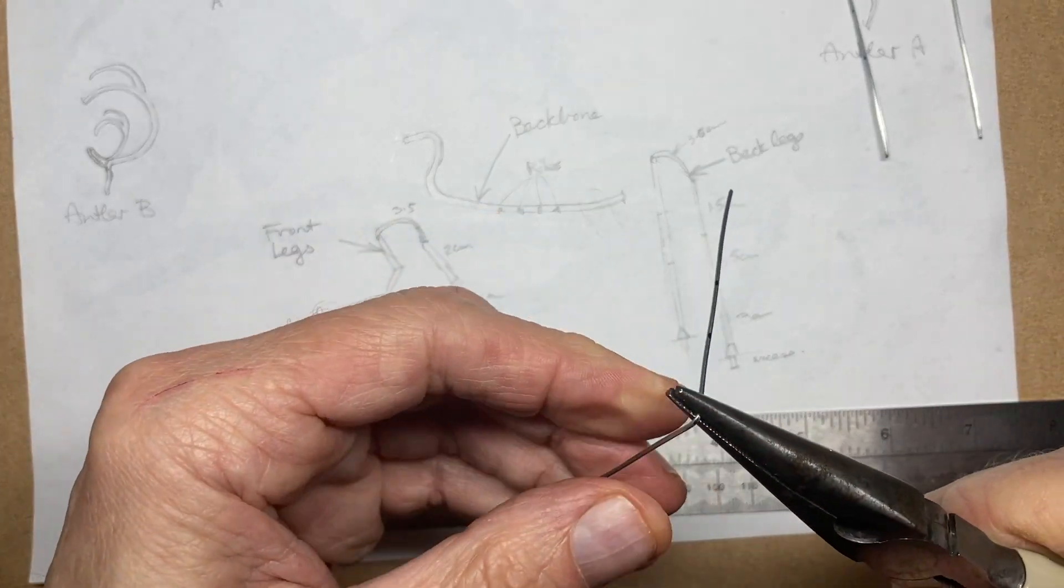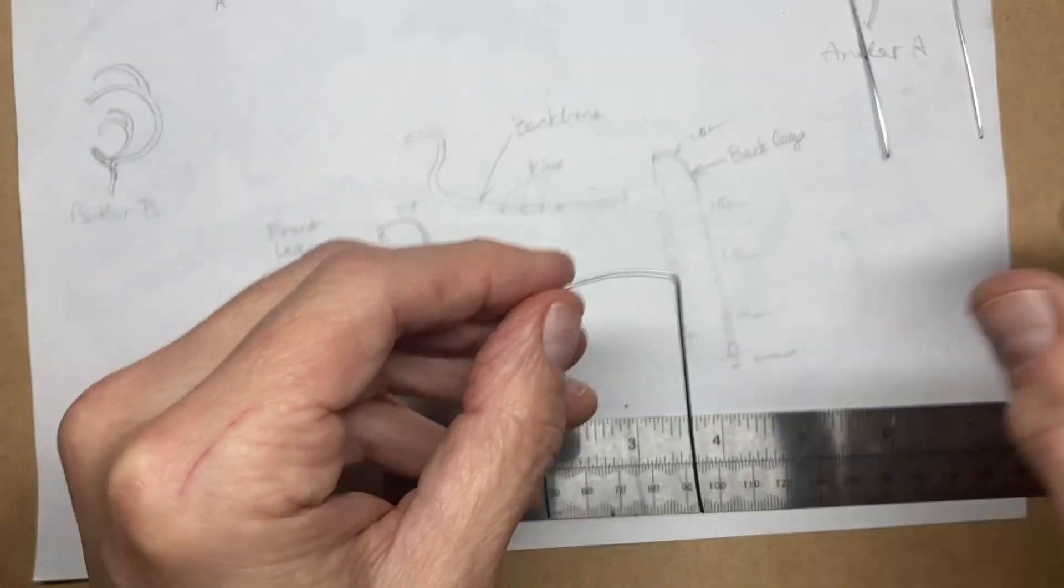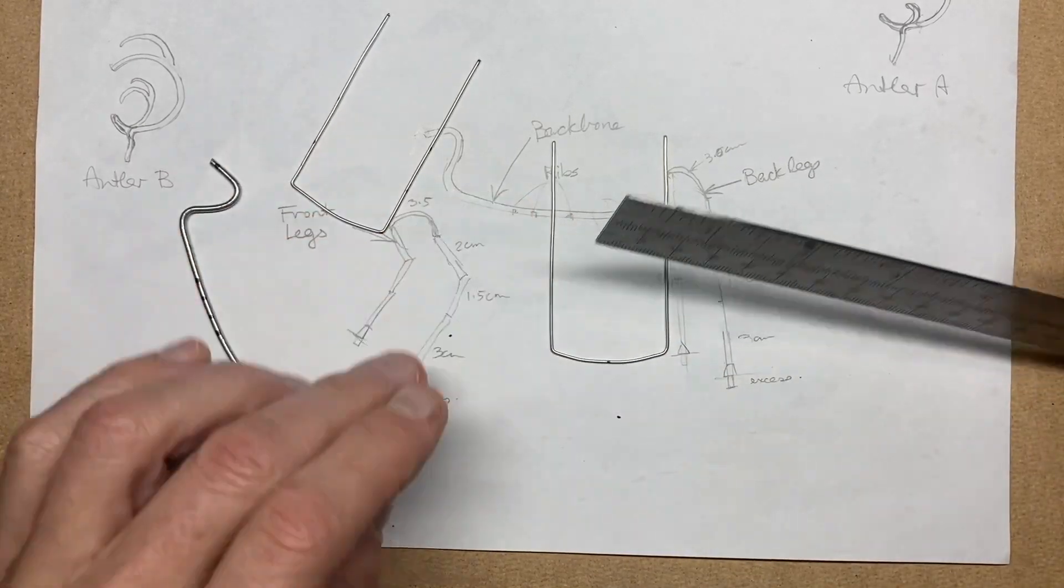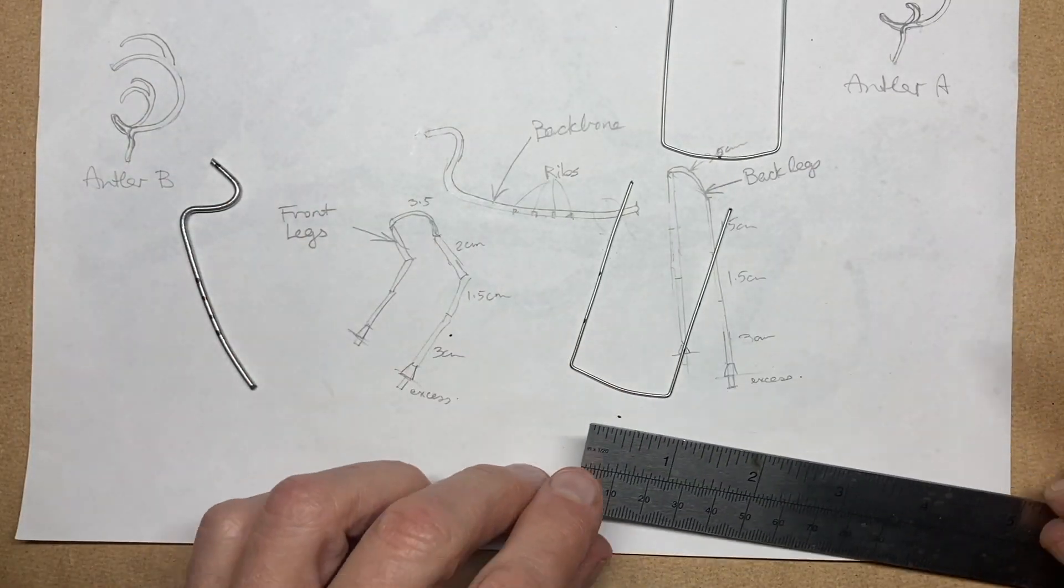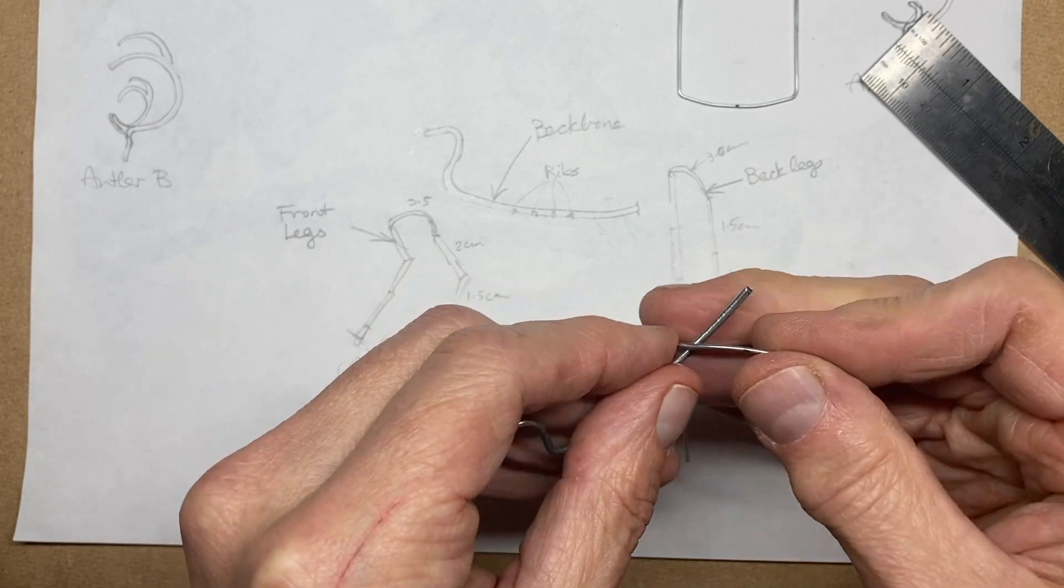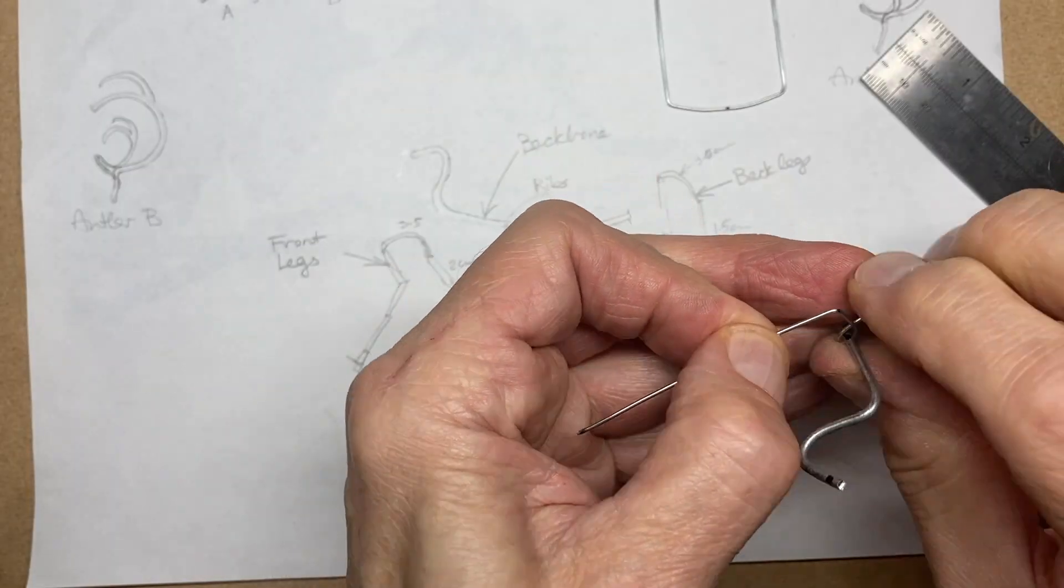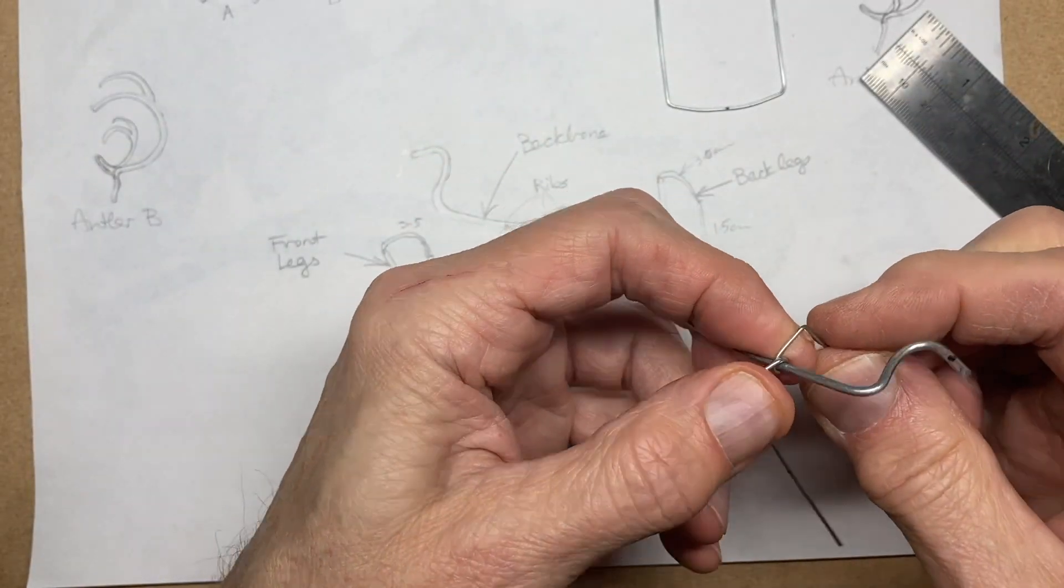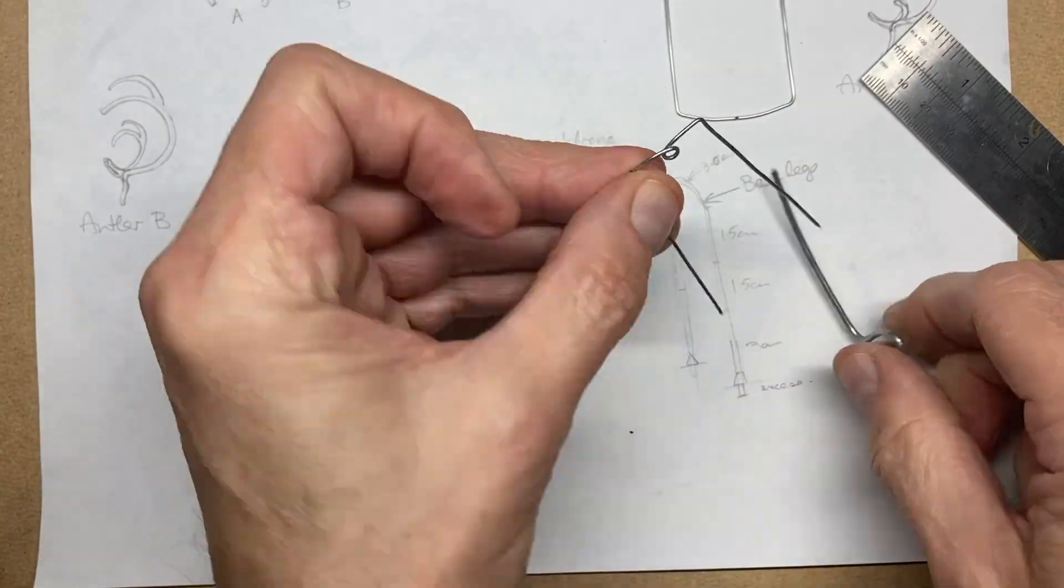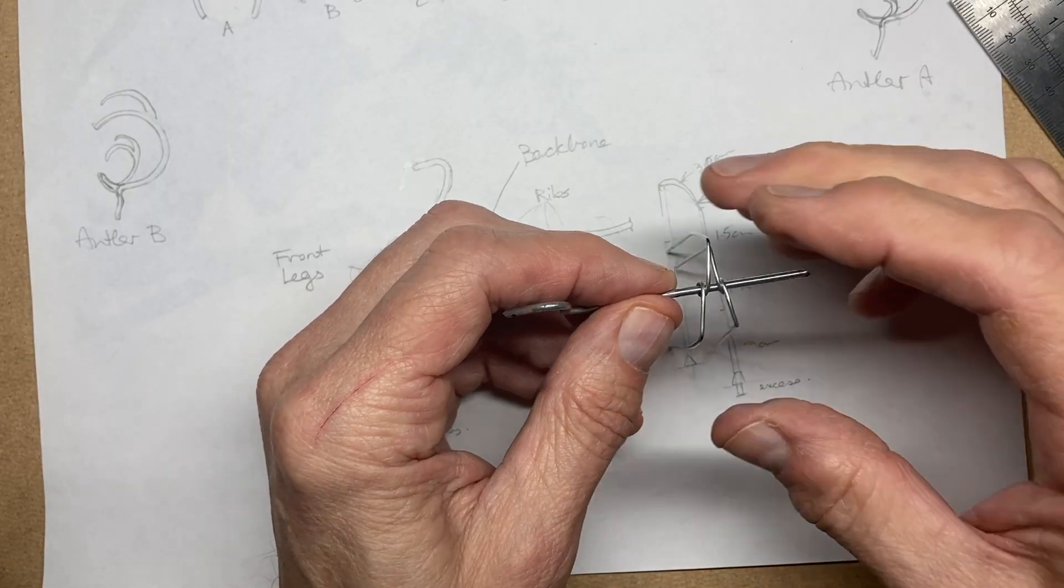Now we're going to do the front legs exactly the same way. What we need to do now is measure the center between the two legs because we're going to wrap the wire around the central backbone using this mark as a guide. So here we go, wrapping it around and pulling it across using that center line as the center so that either leg is either side of the backbone. Just need to tighten it slightly with our pliers and we do the same of course with the back legs as well.